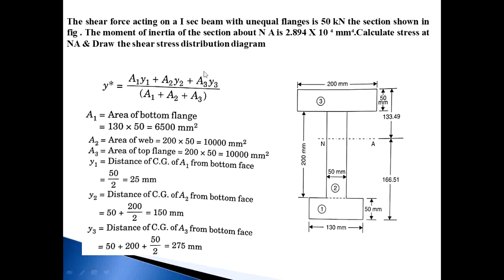Let us see one problem. A shear force acting on an I section beam with unequal flanges is 50 kN. The section is shown in the figure. The moment of inertia of the section about NA is 2.894 × 10⁸ mm⁴. Calculate stresses at NA and draw the shear stress distribution diagram.